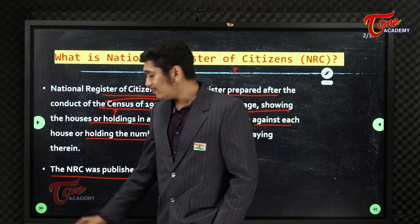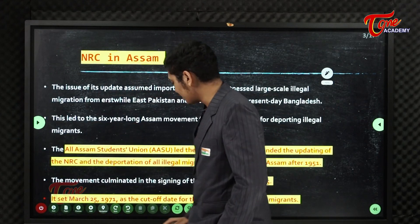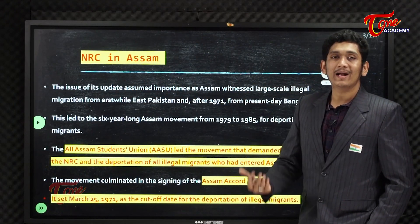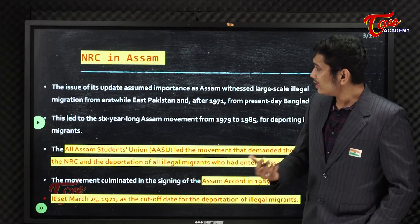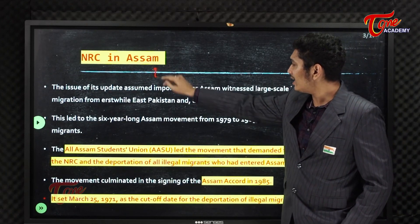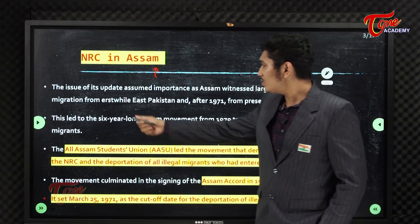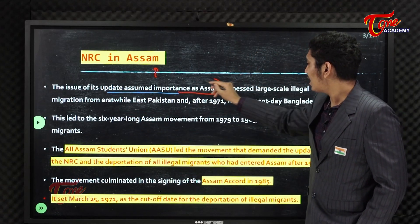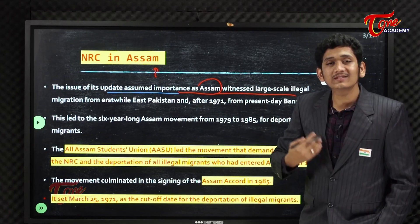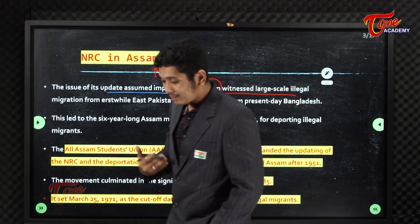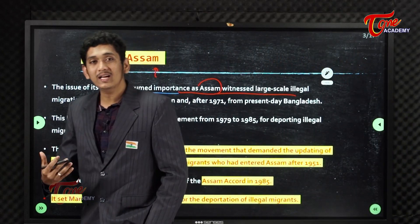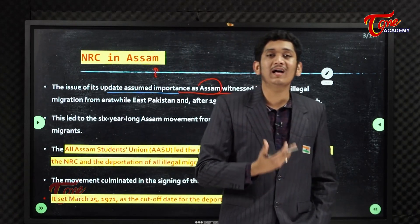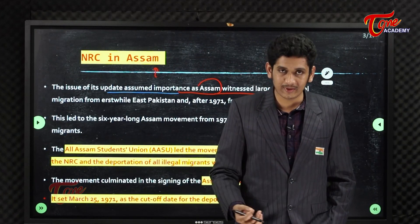From time to time we have said we need to revise this NRC, but this has not happened at the pan-India level. Now, NRC in Assam — the issue of its update assumed importance as Assam witnessed large-scale illegal immigrants coming from Bangladesh during the creation of East Pakistan and also after the Bangladesh Liberation War of 1971.